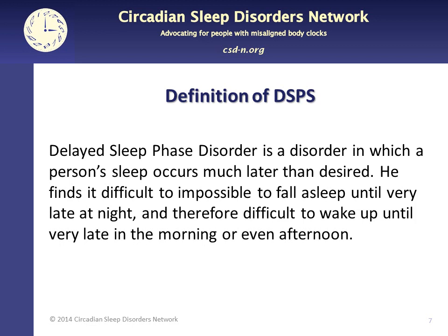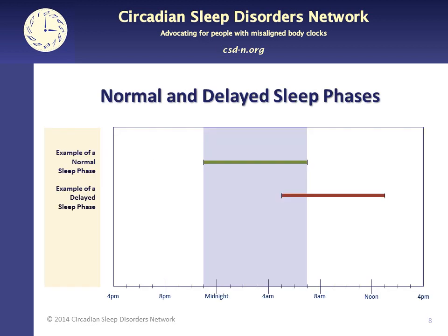Delayed sleep phase syndrome, or delayed sleep phase disorder as it's now called, is a disorder in which a person's sleep occurs much later than desired. He finds it difficult to impossible to fall asleep until very late at night and therefore difficult to wake up until very late in the morning or even the afternoon. For example, a normal sleeper may sleep from 11 p.m. to 7 a.m. Someone whose sleep is delayed six hours would be sleeping from 5 a.m. to 1 p.m. This makes it impossible to hold a typical 9-to-5 job. If the person tried to hold the job anyway but couldn't fall asleep till 5 a.m., he would quickly become severely sleep deprived.